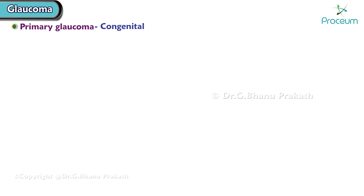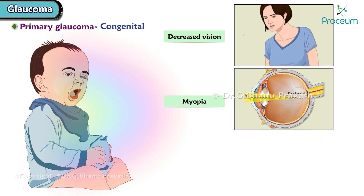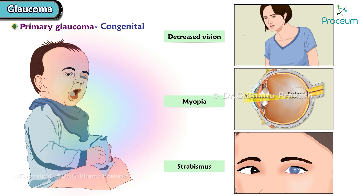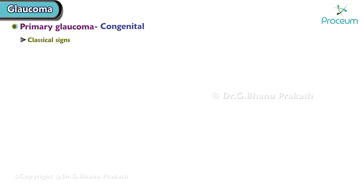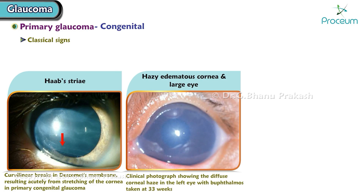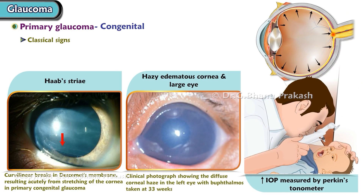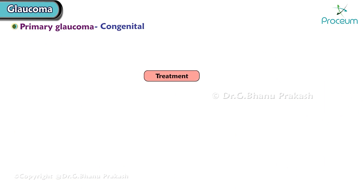A child can also show features of decreased vision, myopia, and strabismus. Classical signs of congenital glaucoma are Haab's striae, hazy edematous cornea, and large eye. Increased intraocular pressure is measured by the Perkins tonometer. Beta blockers are the first line of treatment.